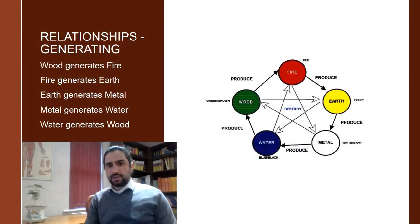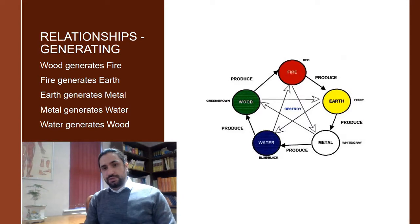As we carry on discussing the interactions between these five elements, we can focus on four different particular types of relationships. The first one is that of generating. We can look at the Five Elements as having a relationship within which one generates the other, and this forms a cycle.